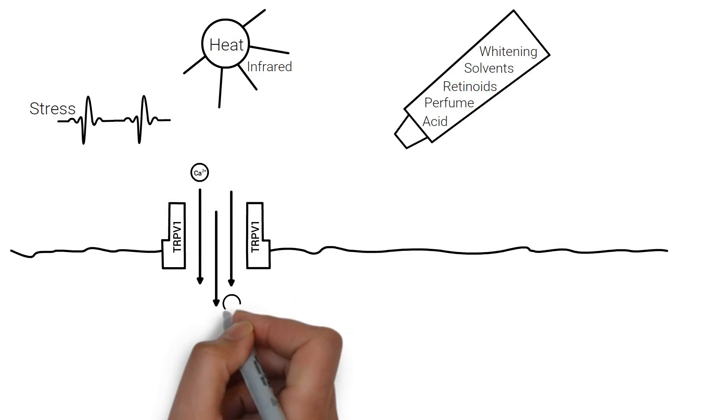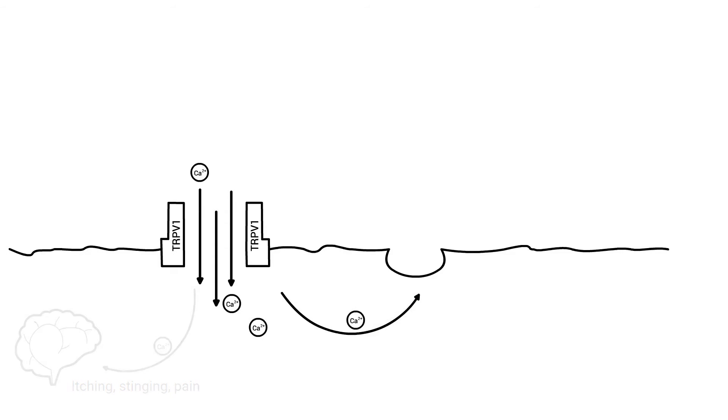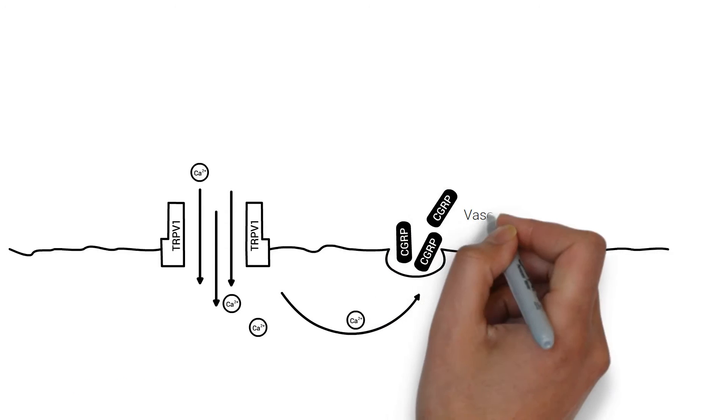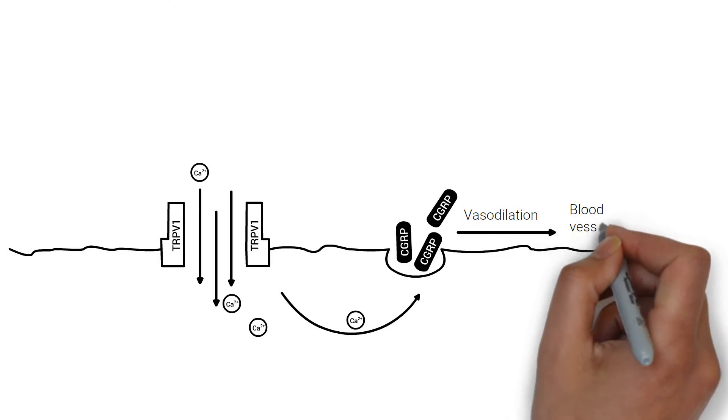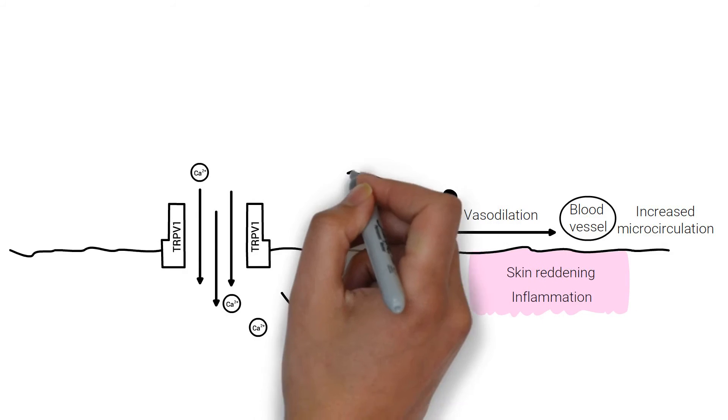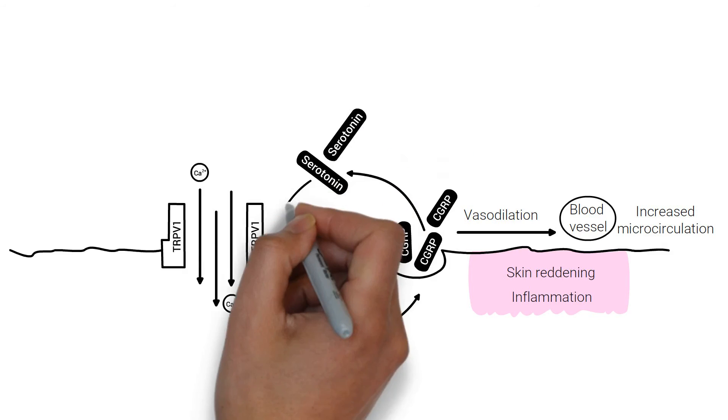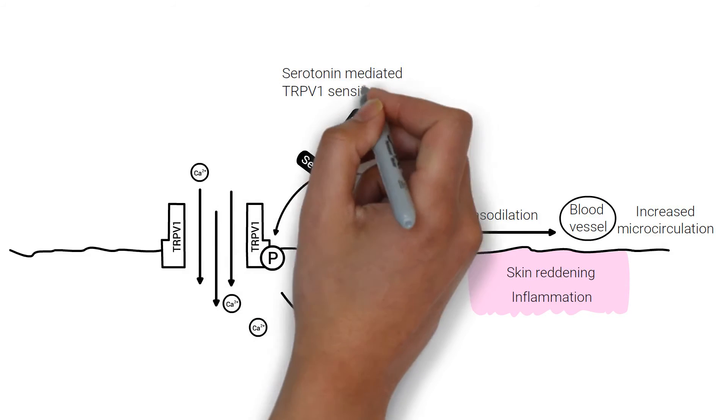The result is calcium influx, which on the one hand creates uncomfortable skin sensations and on the other hand leads to the release of CGRP. The result is an increase in microcirculation. Skin reddening occurs. Inflammatory reactions evoked by CGRP increase the level of serotonin and sensitize the TRPV1 receptors. A vicious cycle of skin hypersensitization is initiated.